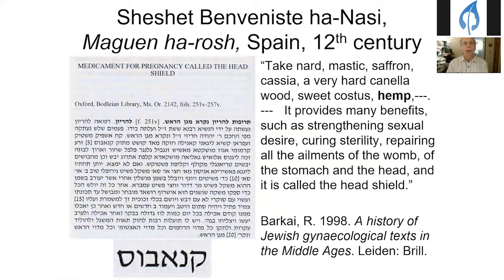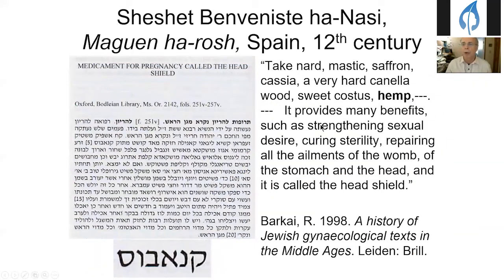This next selection was taken from Barcelona in the 12th century — notably in Hebrew rather than Spanish. The modern word for cannabis appears here as 'cannabos,' slightly different from the ancient Hebrew 'cannabosum.' Cannabis was combined with other herbs, providing many benefits such as strengthening sexual desire, curing sterility, repairing all the ailments of the womb, the stomach, and the head — called 'the head shield.' This is from a scientist named Shechet Benveniste HaNasi.